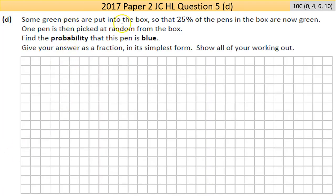Now part D here, this is fairly tricky. Took me a while to get my head around this. Some green pens are put into the box so that 25% of the pens in the box are now green. So there's a 1 in 4 chance of picking a green pen out of it. That's what they're saying.